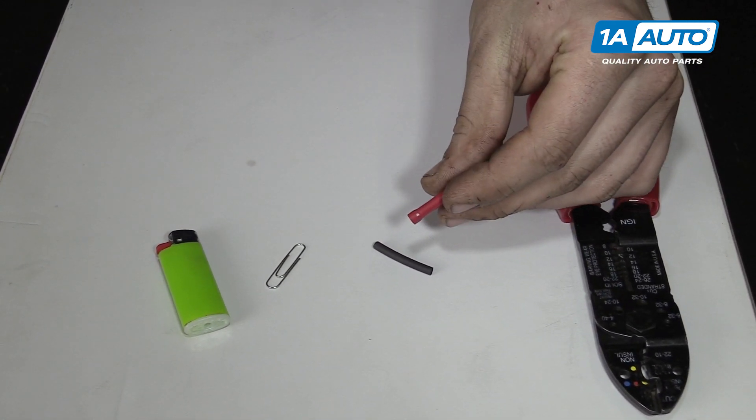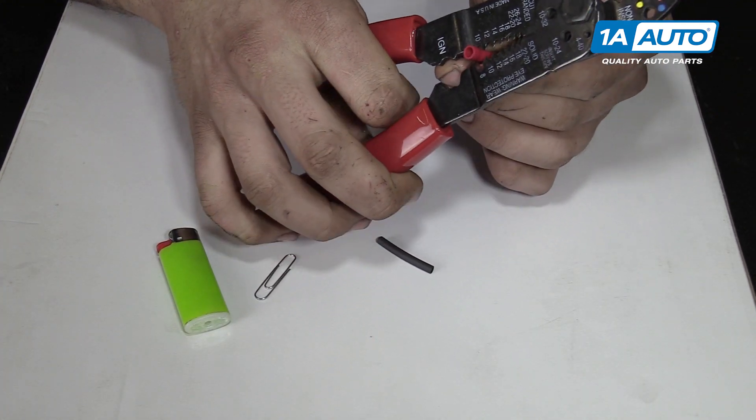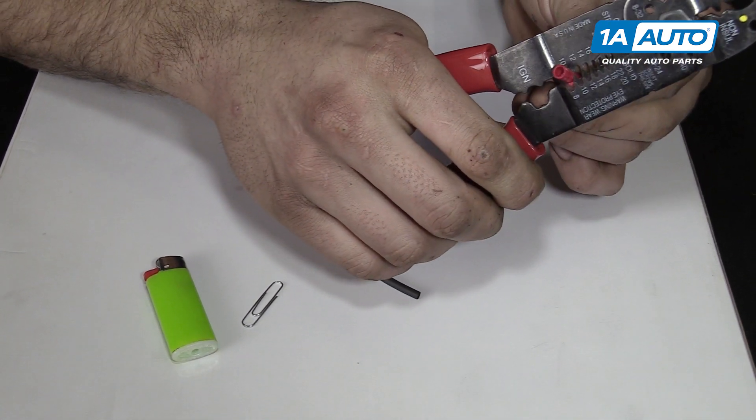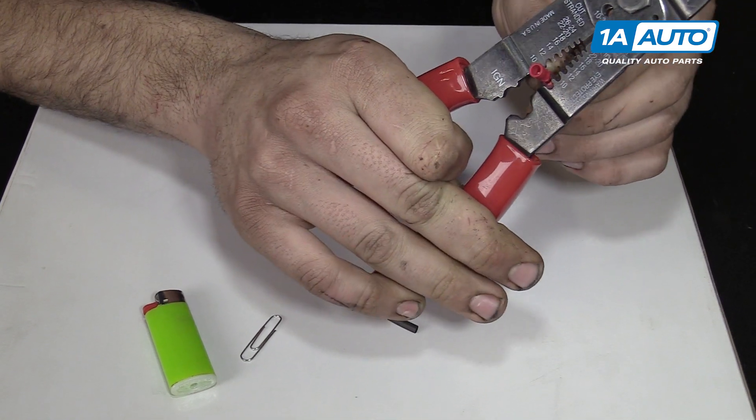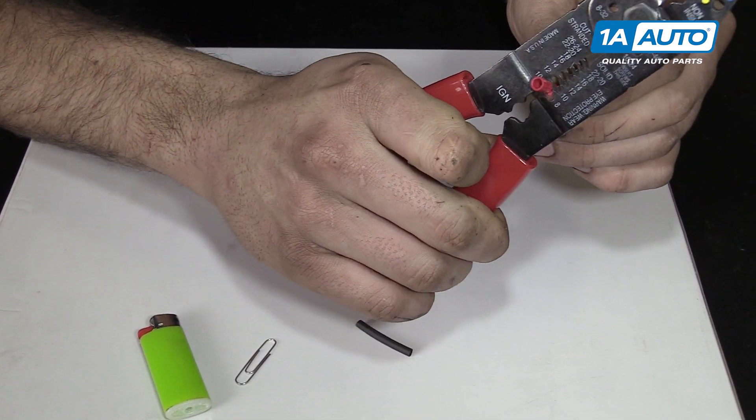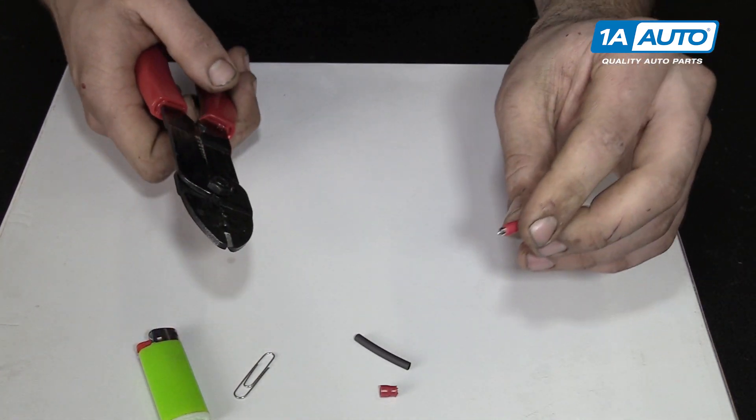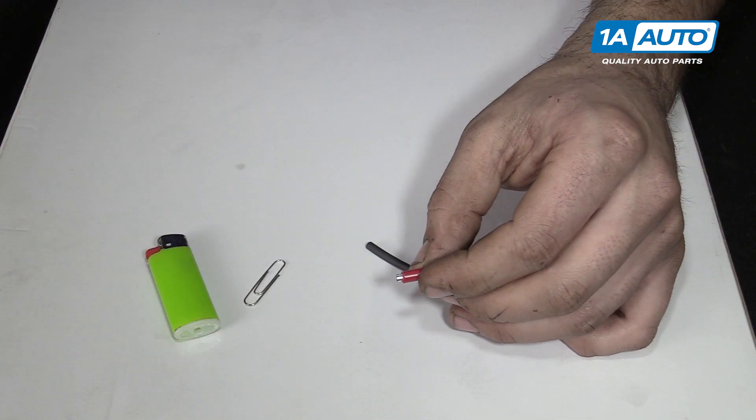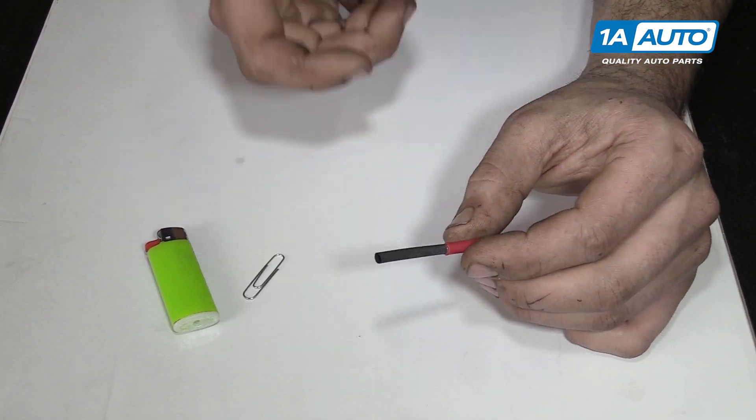Start by taking your butt connector. Using the 10 to 8 gauge piece of your strippers, just kind of press down around there nice and evenly. Rotate it a little and crimp it a little and rotate and strip and eventually it'll pop off. Give us some bare metal there. The reason we're doing that, so our shrink tube slides over that nicely.